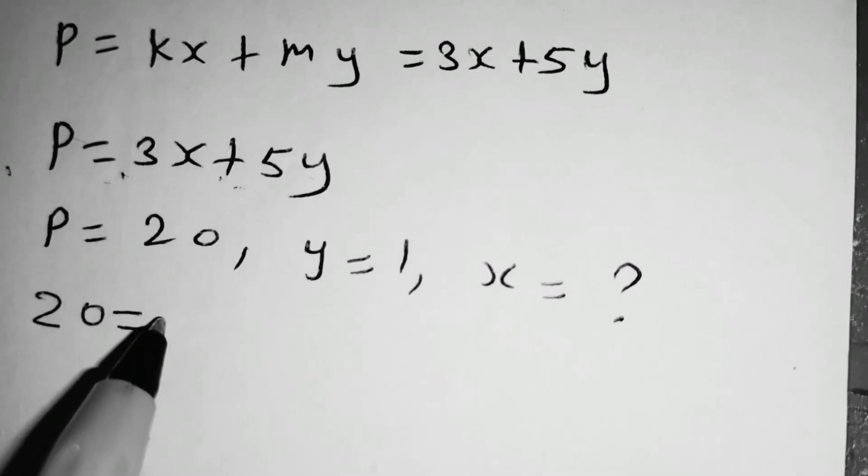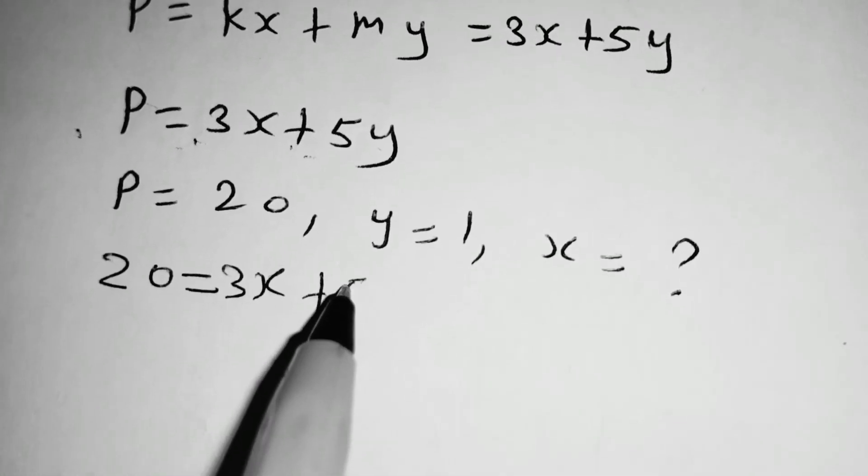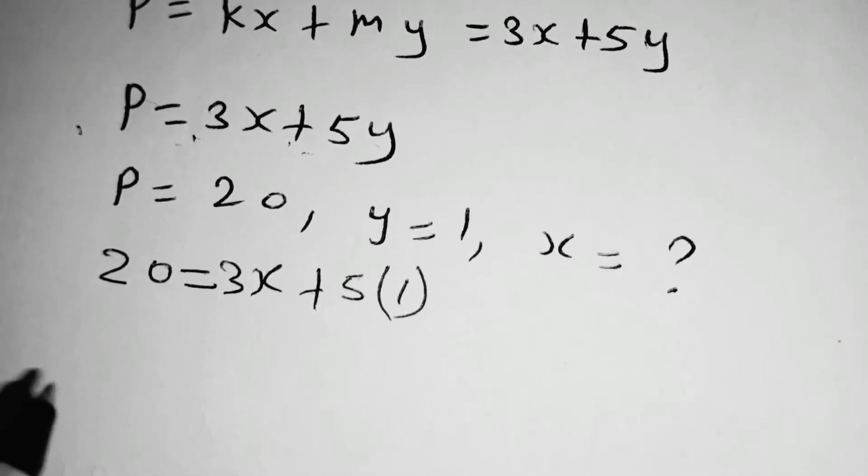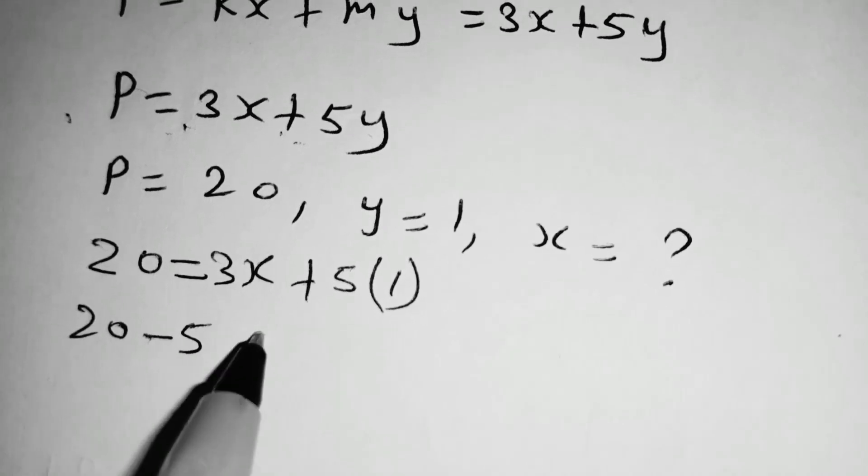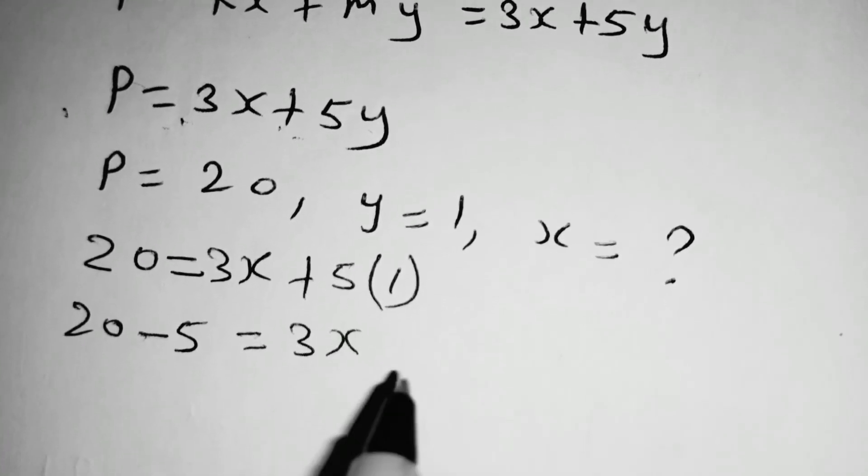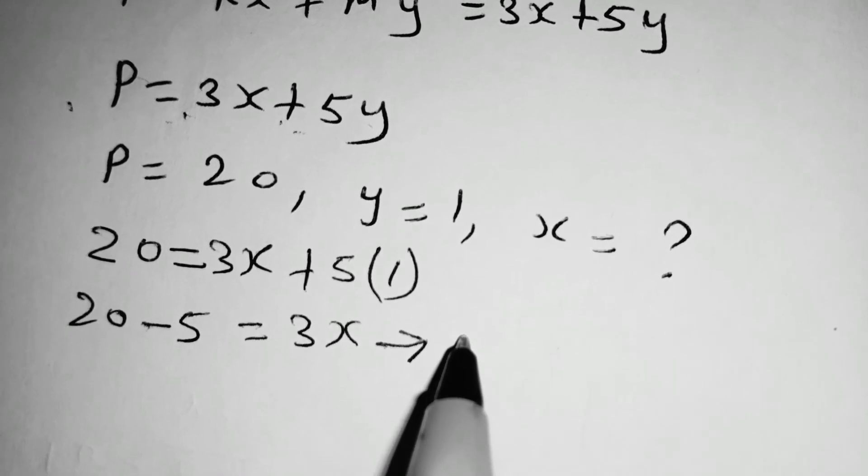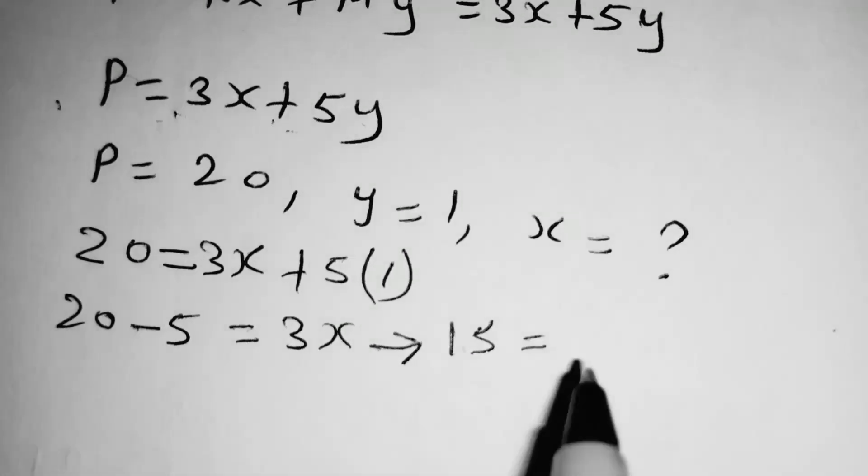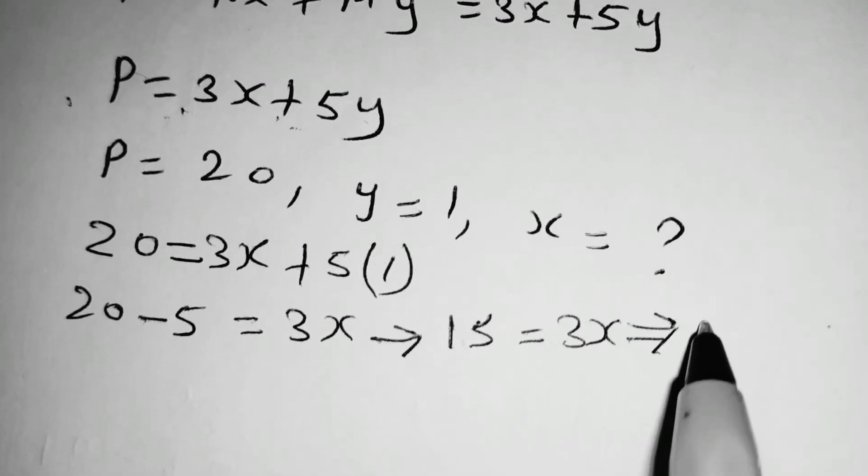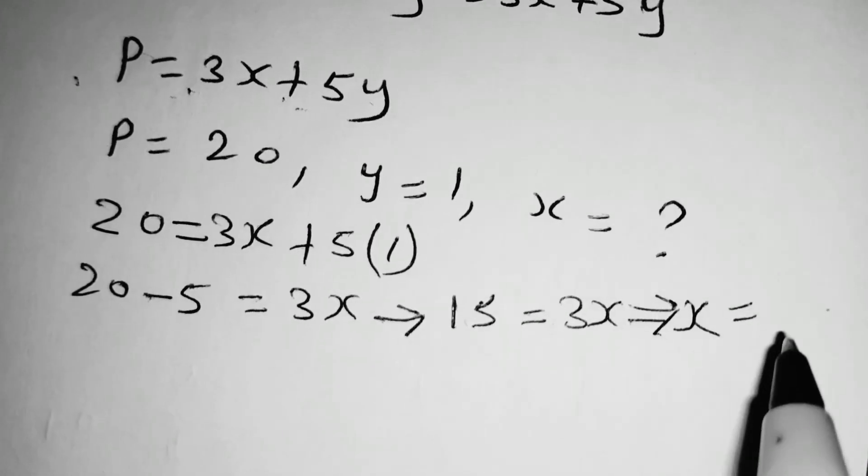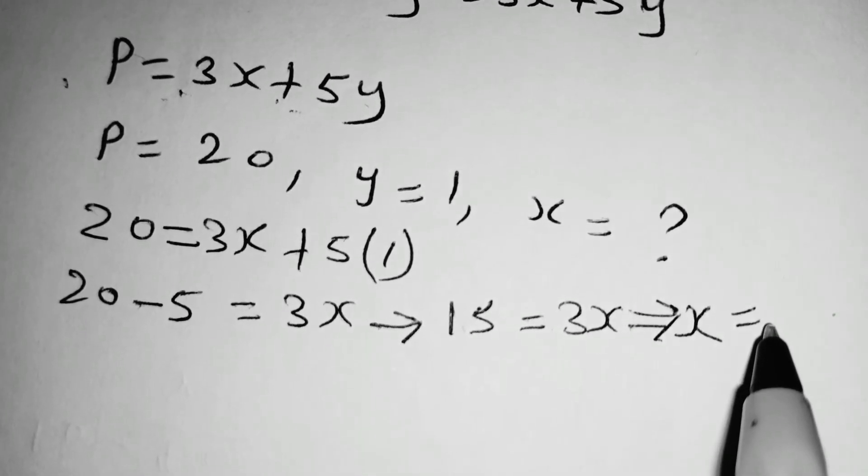20 is equal to 3X plus 5 multiplied by 1. 20 minus 5 is equal to 15, which is equal to 3X, meaning that you divide by 3 on both sides. X is equal to 15 divided by 3, which is 5.